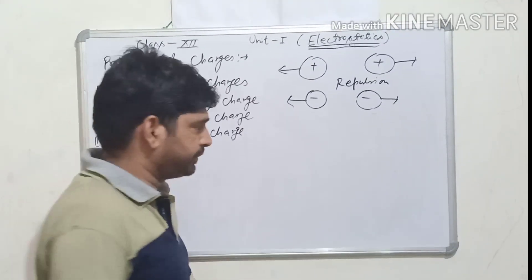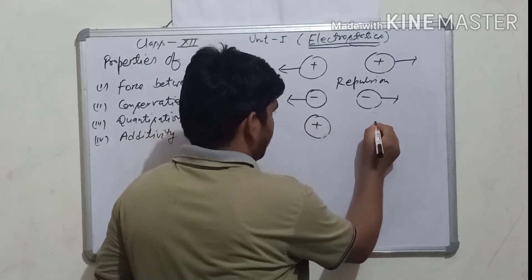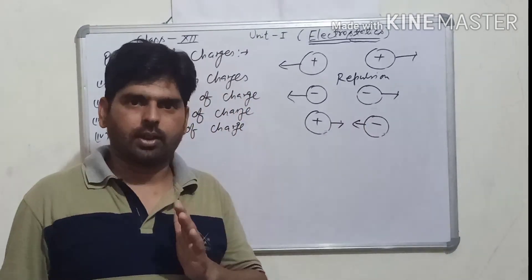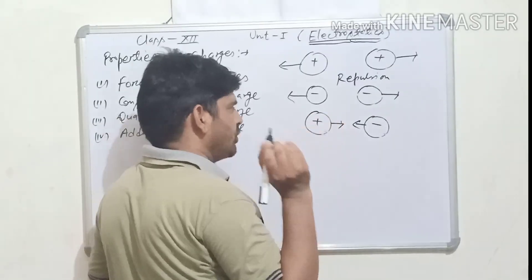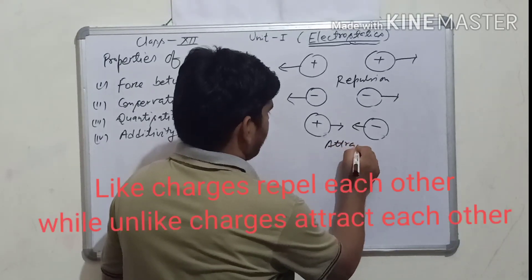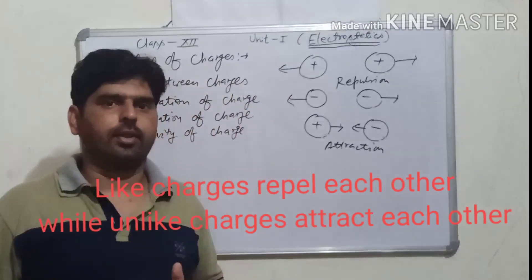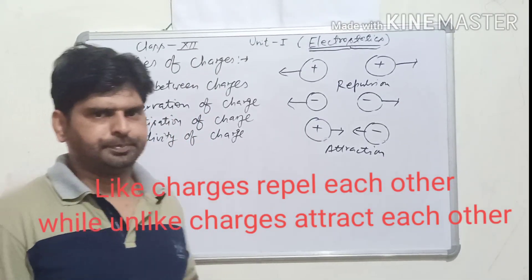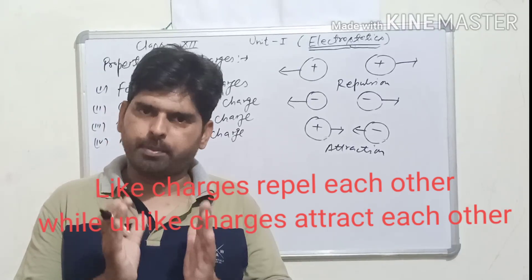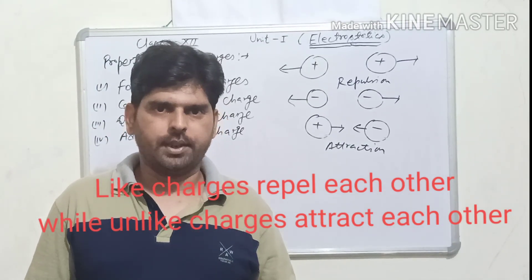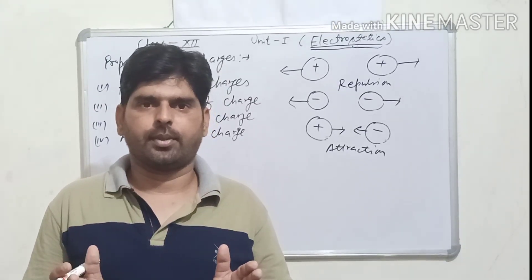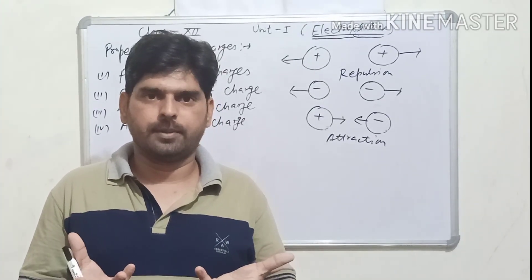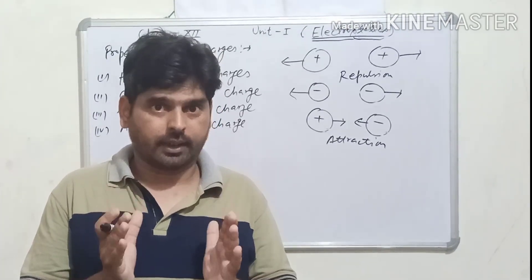When opposite charges are there — one is positive and another one is negative — they attract each other by a force. So there is a force of attraction, and it is observed practically. There may be a force of attraction or repulsion between two charges, and it depends upon the nature of the charges. Similar charges always repel, and opposite charges always attract each other.